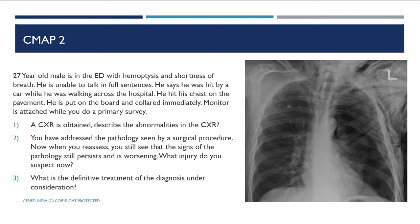Now let's look at the chest X-ray answers. Using the ABCDE method — Airway: the trachea appears shifted to the right, so there is tracheal deviation to the right. Breathing: collapse of the left lung with lung markings not extending to the thoracic cage on the left side. Circulation: the mediastinum shows slight deviation to the right.